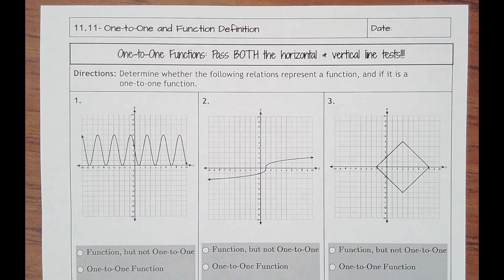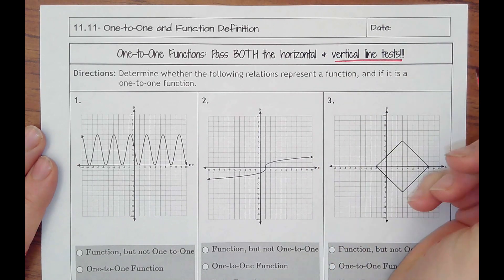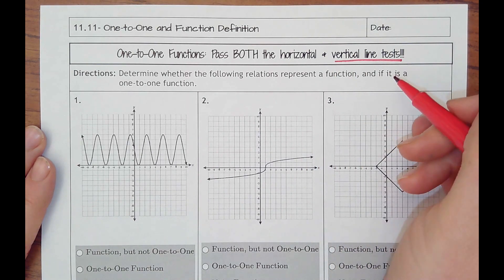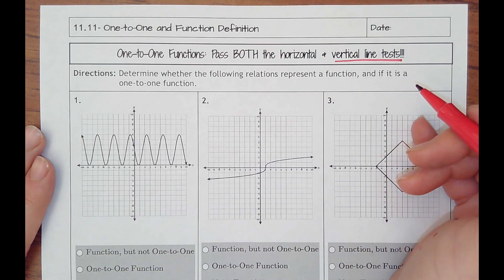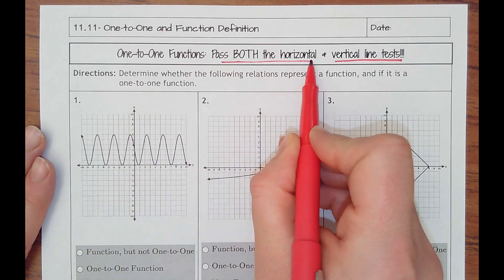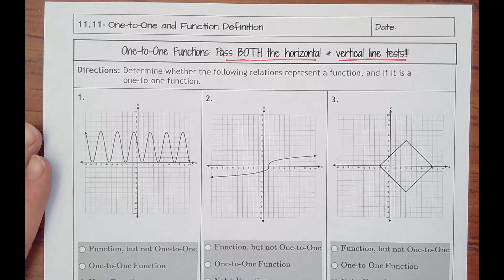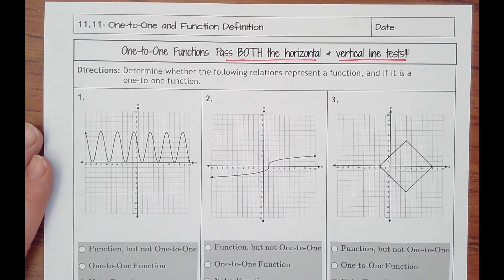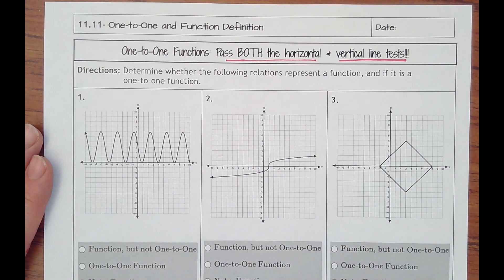Lesson 11.11 is called one-to-one and function definition. You should remember that a function has to pass a vertical line test to even be a function, and then there's a more specific type of function that's called one-to-one. That means it's going to pass the horizontal line test as well. So there should only be one point on each vertical line and one point on each horizontal line.